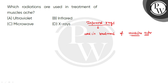Muscular strain treatment — the radiation used in the treatment of muscular strain. So it was a very direct question, and we can answer it correctly. Option B would be the correct choice.